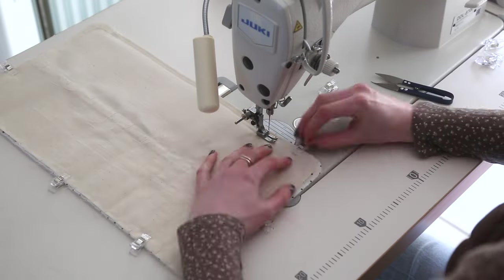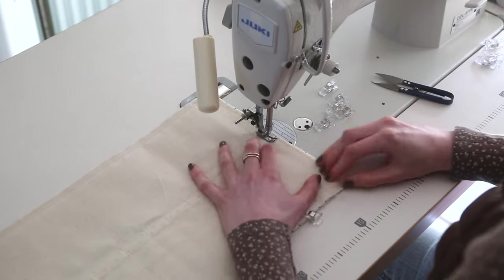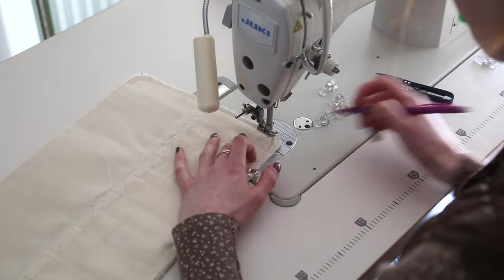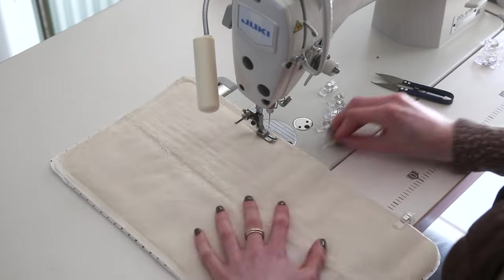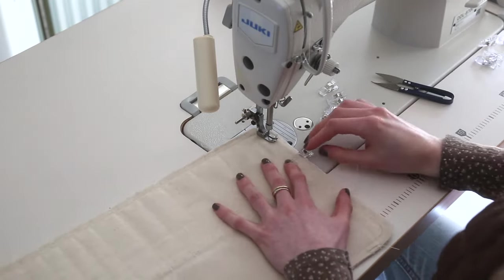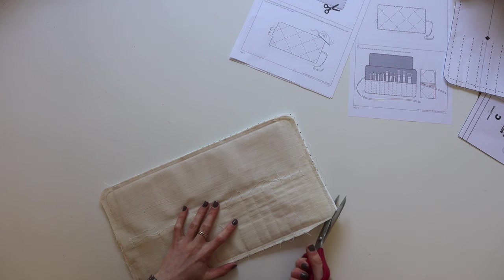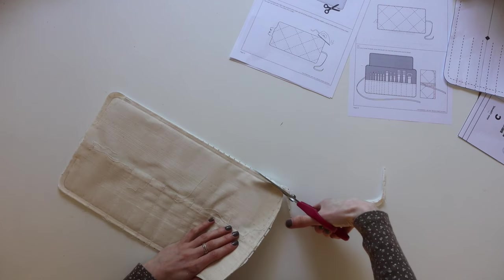Stitching curves can be quite tricky but I find it helpful if you use a pencil and mark out your seam allowance so you know where you're going to be stitching and then just take it really slowly on those corners, placing your needle down, lifting the foot up and moving the fabric around. Then before we turn the bag the right way around we're going to reduce some of that bulk around the corners just trimming the edges off.